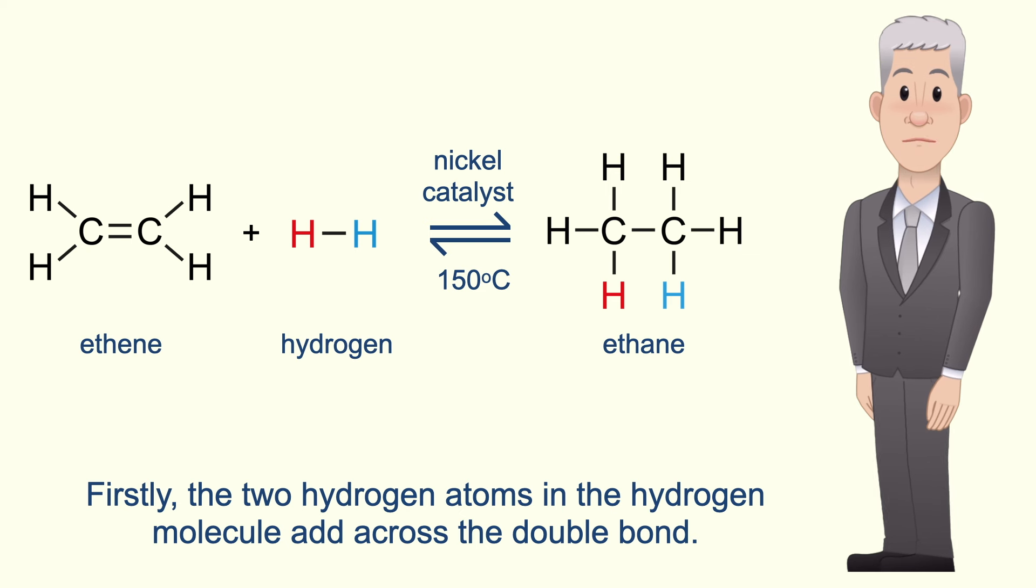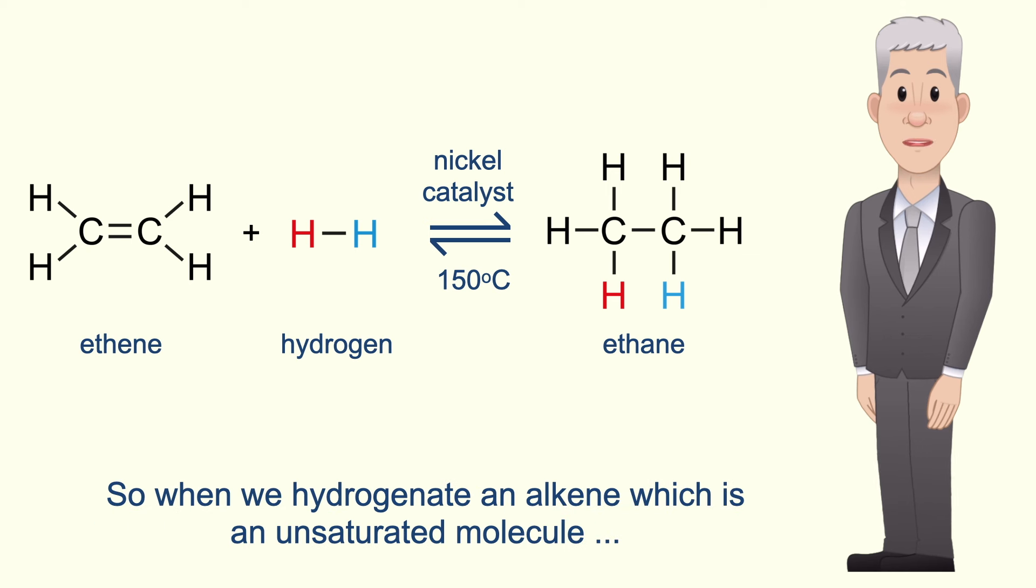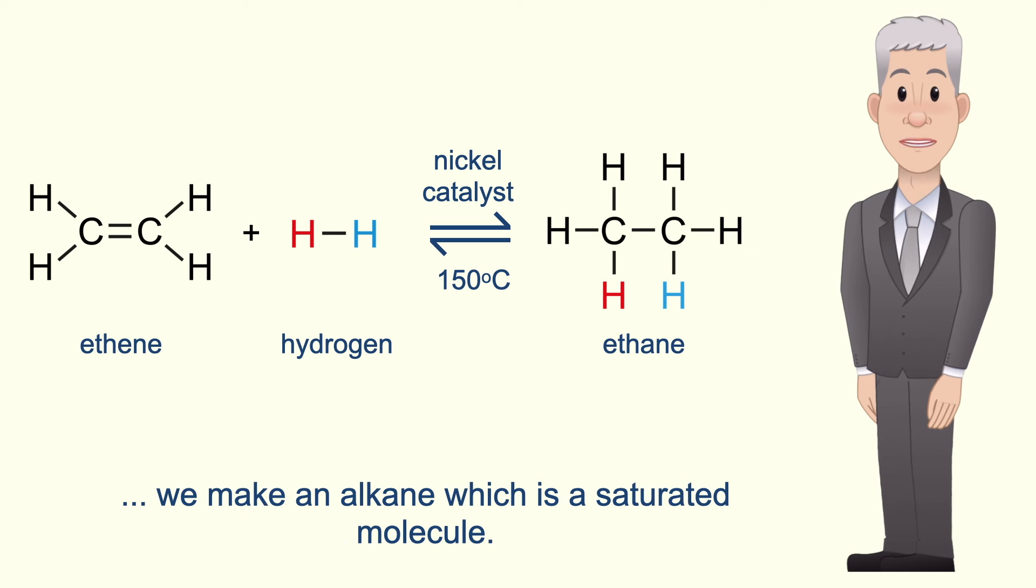Firstly, the two hydrogen atoms in the hydrogen molecule add across the double bond, and I'm showing that more clearly in this diagram. So when we hydrogenate an alkene, which is an unsaturated molecule, we make an alkane, which is a saturated molecule.